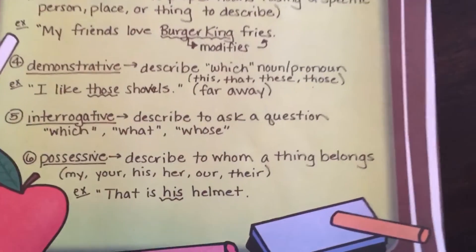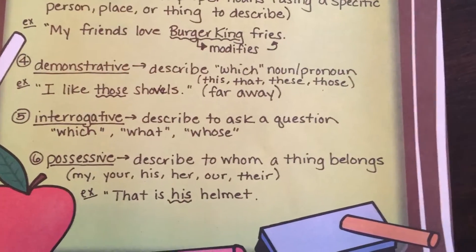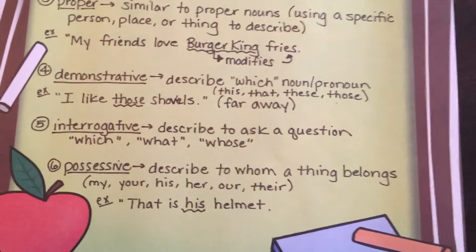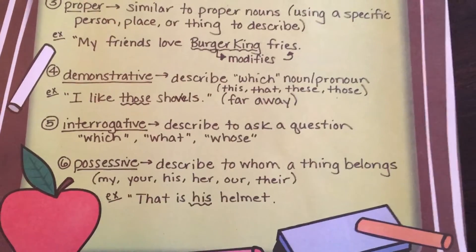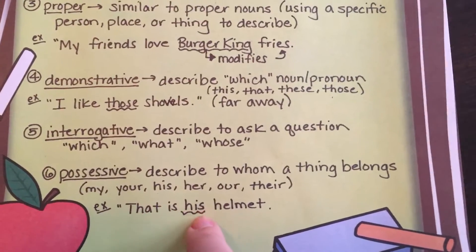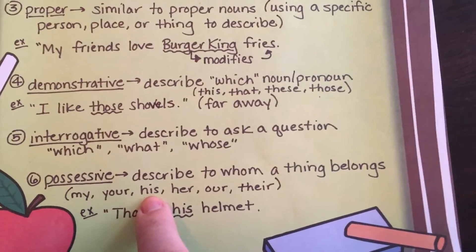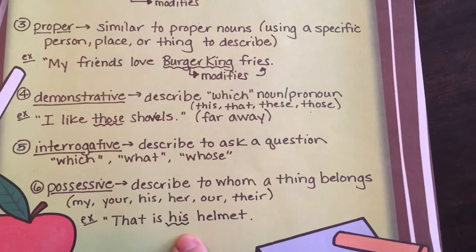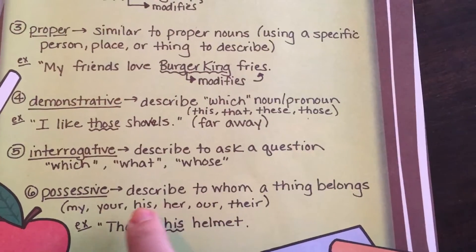Our last kind of adjective is possessive — it describes to whom a thing belongs. This looks a lot like one of our possessive pronouns that we studied, and they're almost the exact same. In adjective form: 'That is his helmet.' Our choices are my, your, his, her, our, or their. Whose helmet? His. You can even say 'my helmet.'